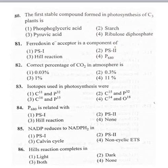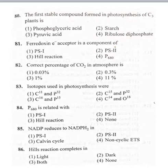81st bit: ferredoxin electron acceptor is a component of — option 1 photosystem 1, option 2 photosystem 2, option 3 hill reaction, option 4 P6CAT. There are two types of photophosphorylation: cyclic and non-cyclic. In cyclic photophosphorylation only photosystem 1 is involved, while in non-cyclic photophosphorylation both photosystem 1 and photosystem 2 are involved.